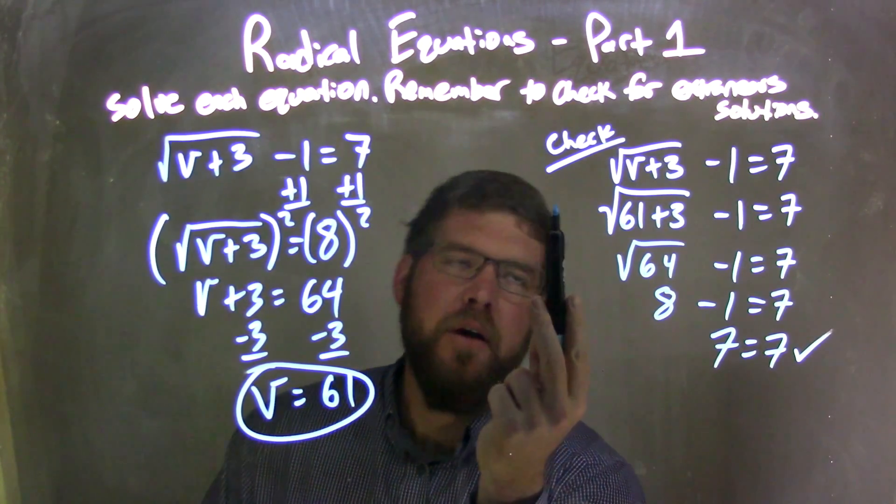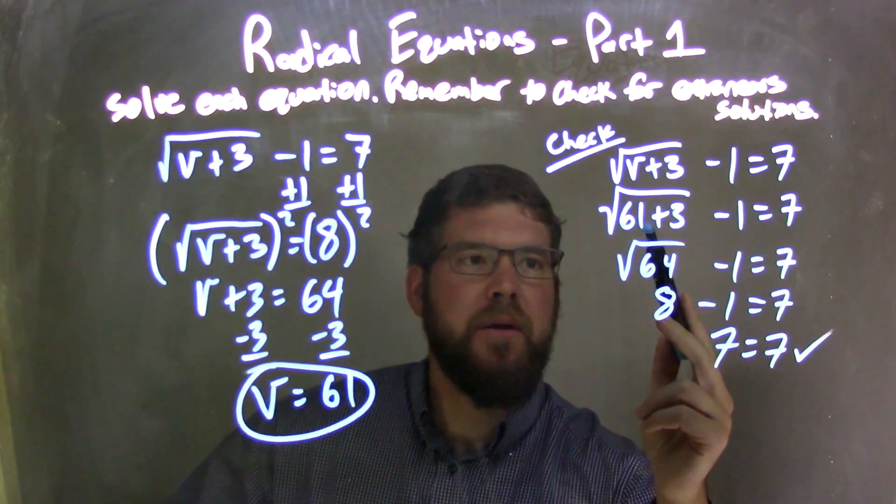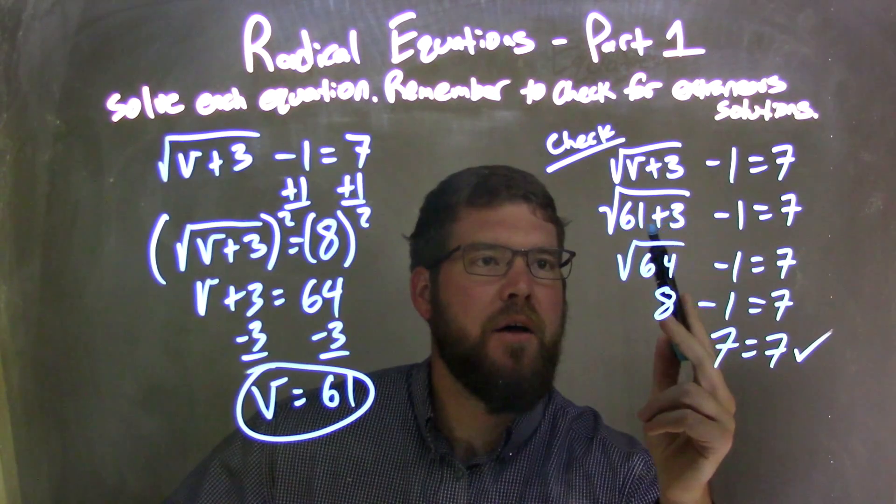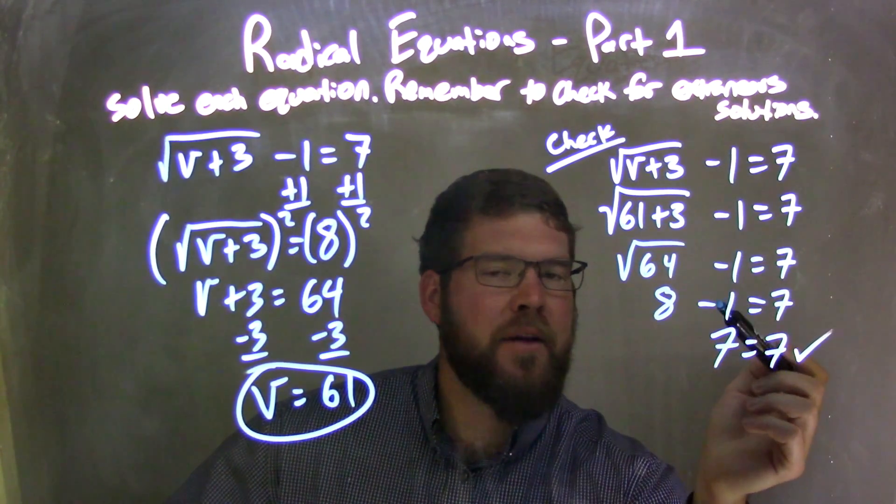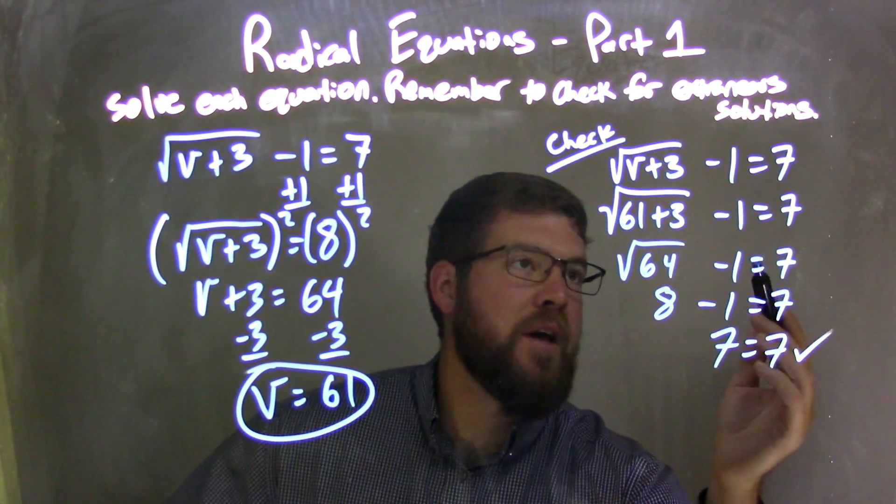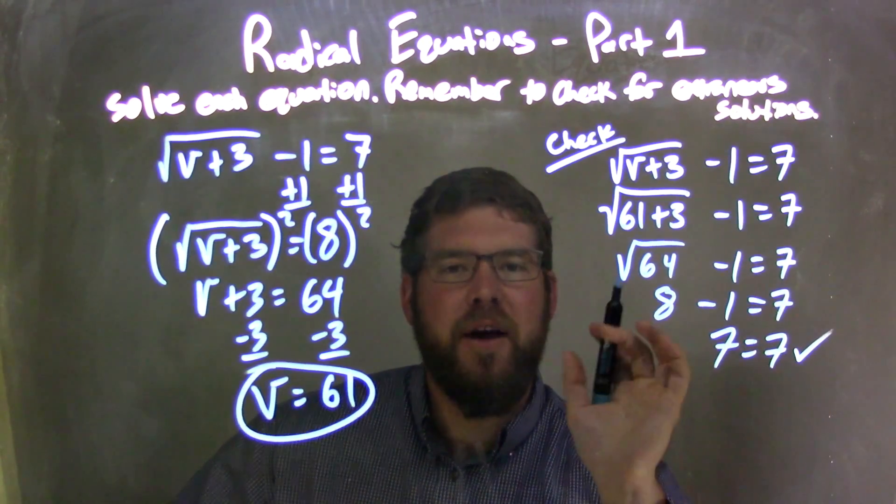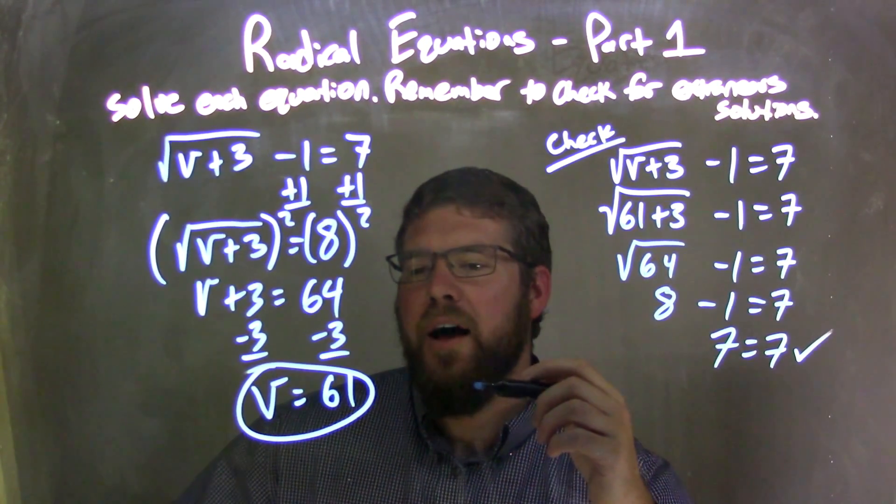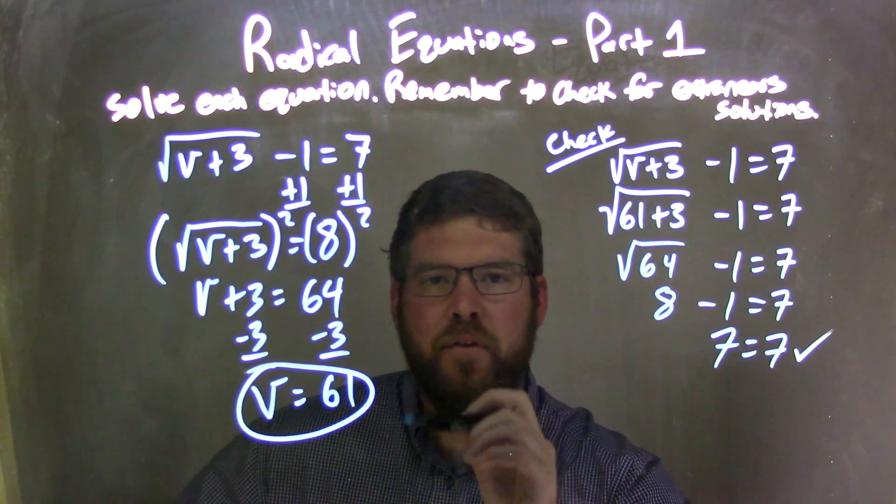I had to check that answer. By checking, I rewrote the equation and substituted 61 in for v. 61 plus 3 is 64. Square root of 64 is 8. I brought down the minus 1 the whole way. 8 minus 1 is 7. 7 equals 7. Both sides are equal - that's a true statement. My check confirmed that we don't have an extraneous solution and that v equals 61 is my final answer.